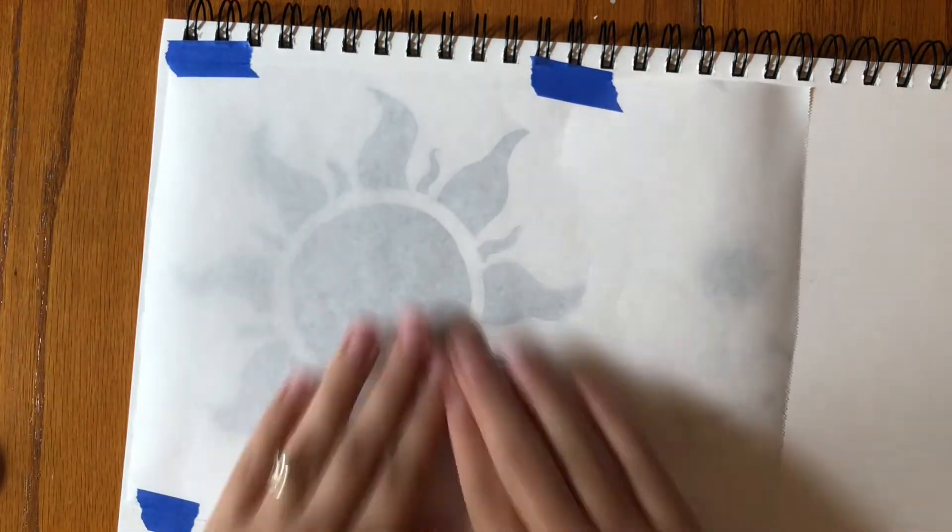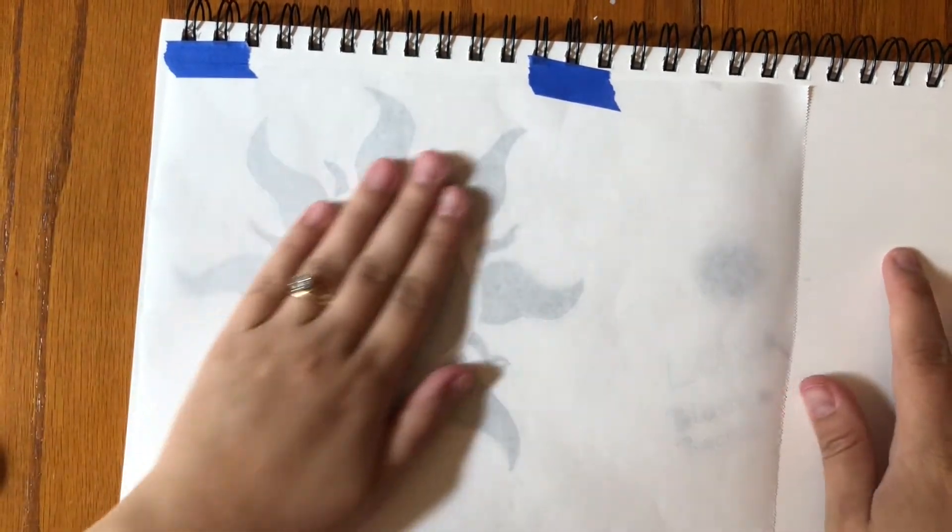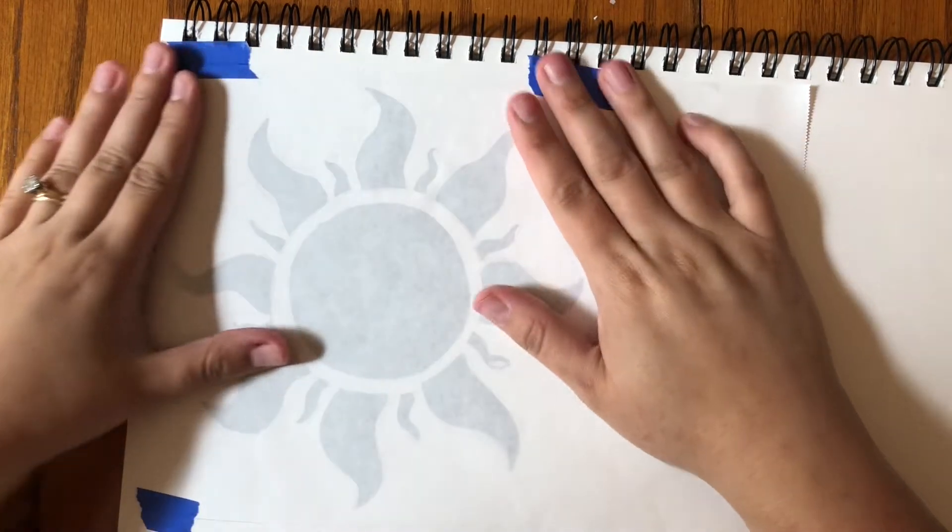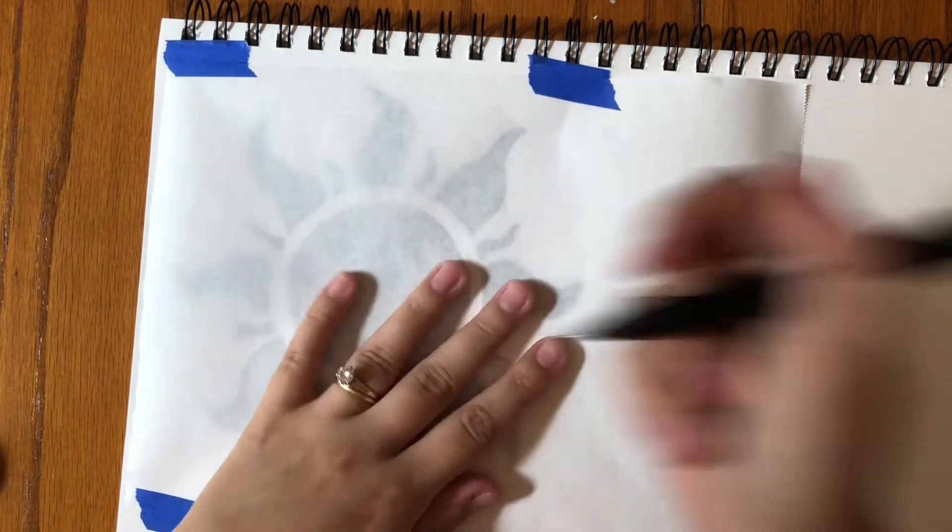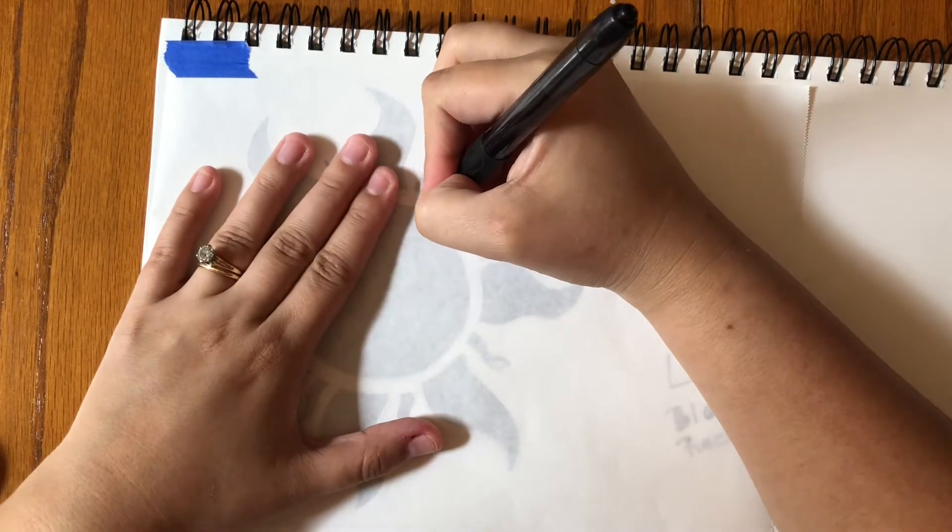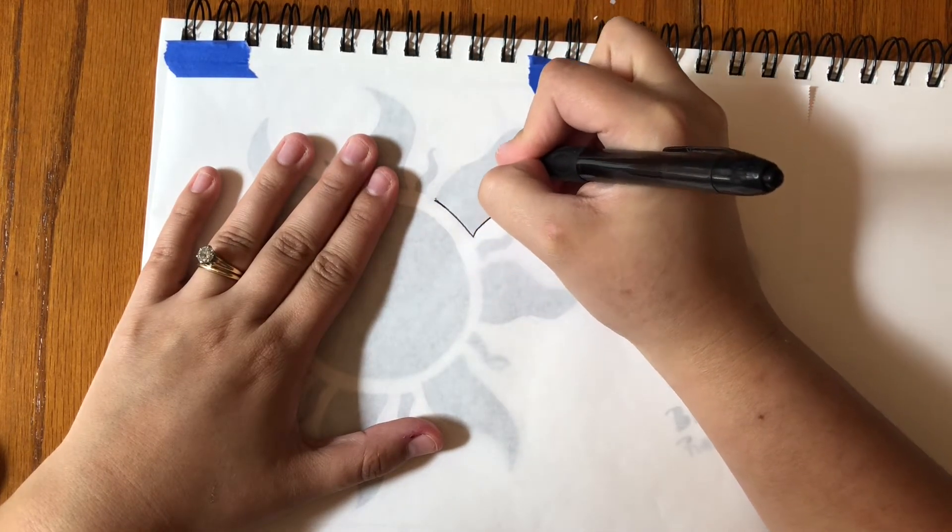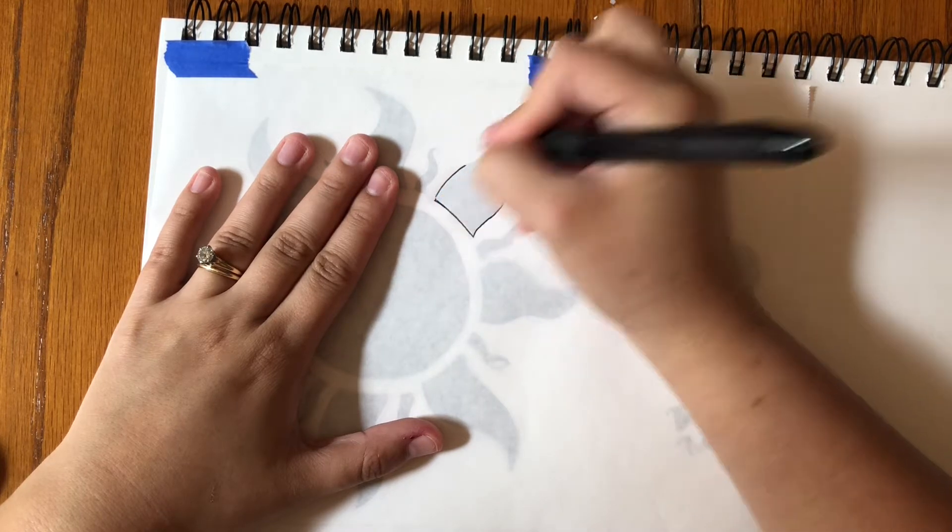You can see our design nice and clear through our pretty transparent, or partially transparent freezer paper. So now I've just got a pen and I'm going to trace all my shapes through.